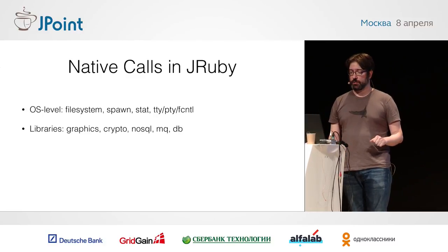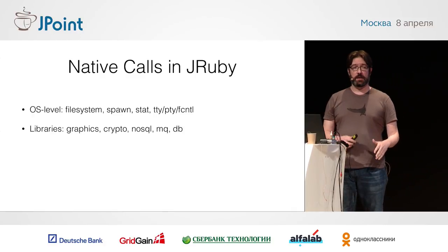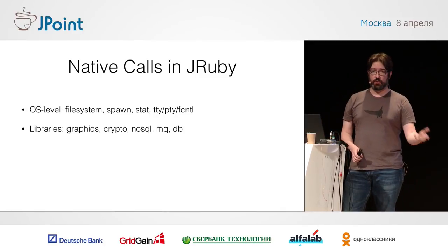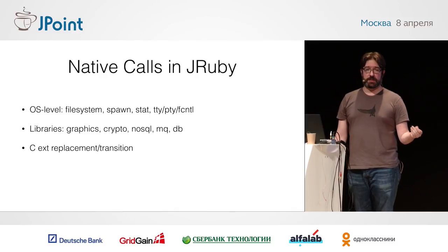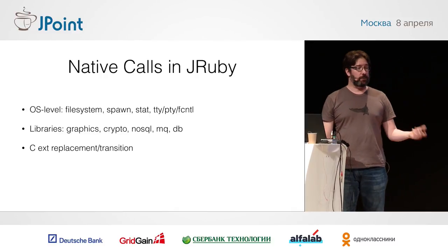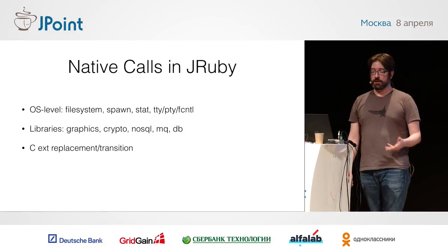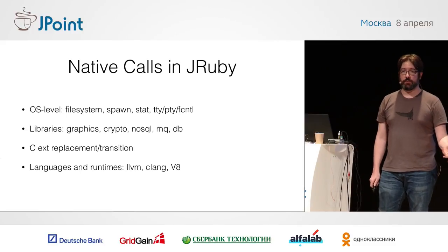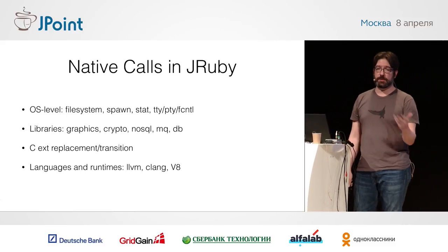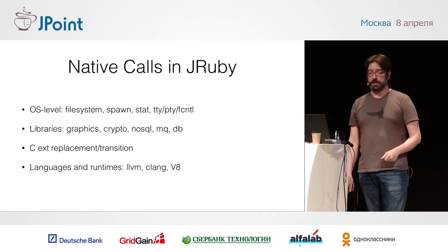All that kind of stuff has to be supported. Graphics libraries, crypto libraries, NoSQL databases — all the different C libraries out there that Rubyists expect to use, we need to be able to call as well. Ruby also has its own C extension API, but unfortunately we can't support it because it's invasive and doesn't fit well into the JVM. We need to at least wrap those C libraries and call them directly. People are also using Ruby to script LLVM, to script Clang, to connect up to V8.